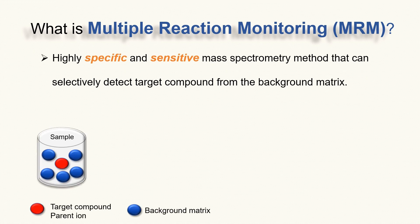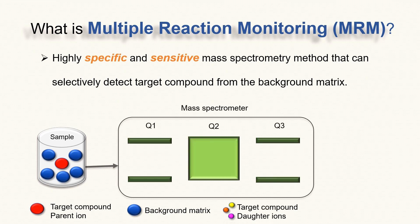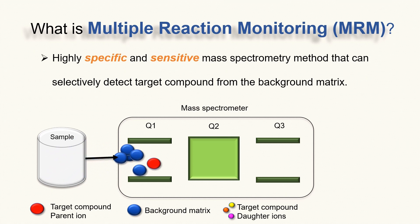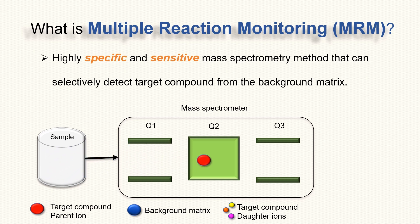The red ball represents the parent ion of your target compound; the blue balls represent background matrix. When the sample enters the mass spectrometer, both the target ion and background matrix enter Q1. Q1 is set in a way that only the target ion can travel through Q1 into Q2.